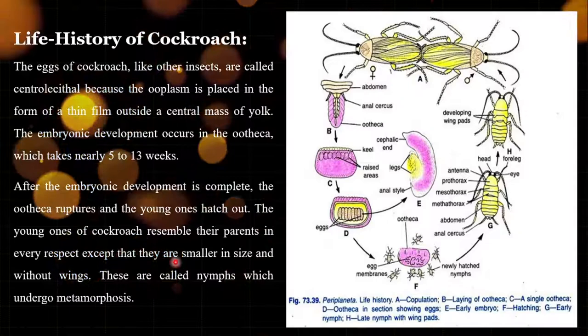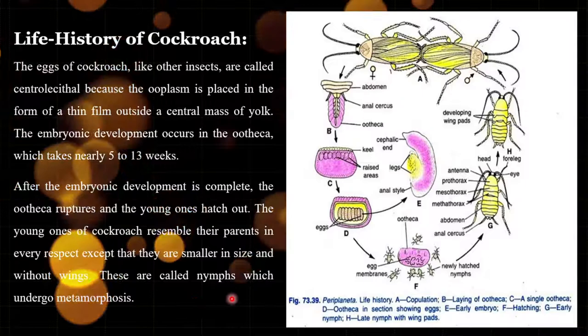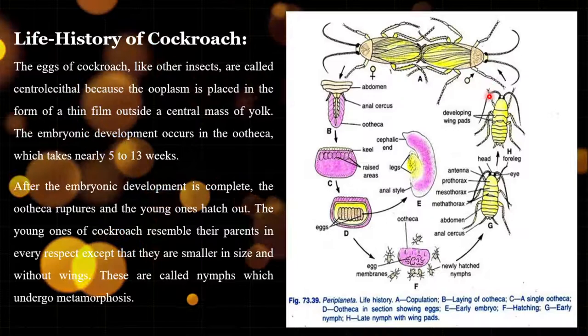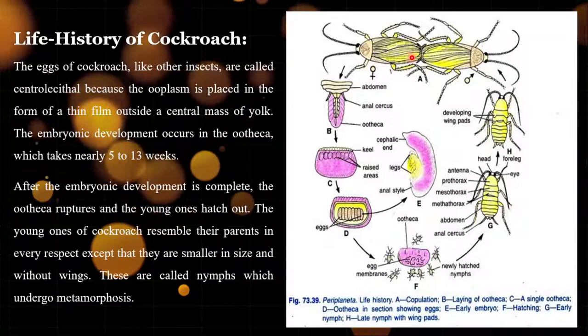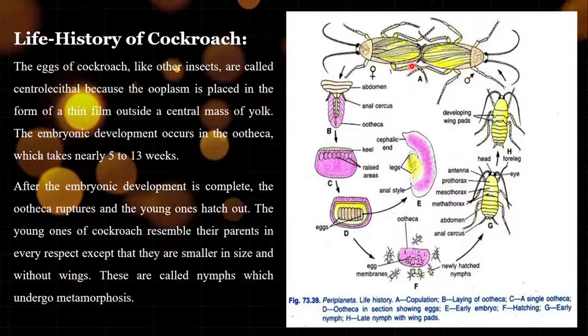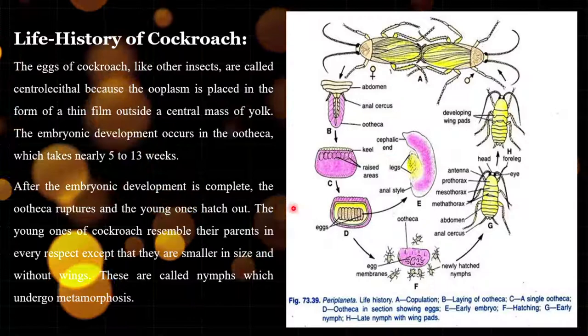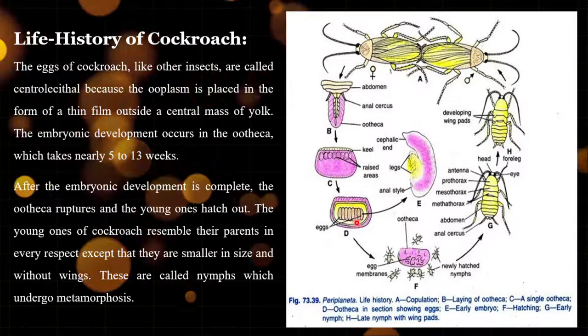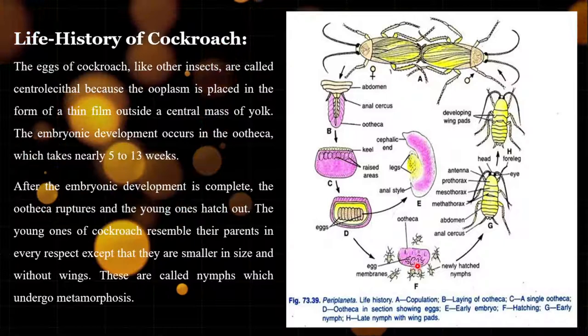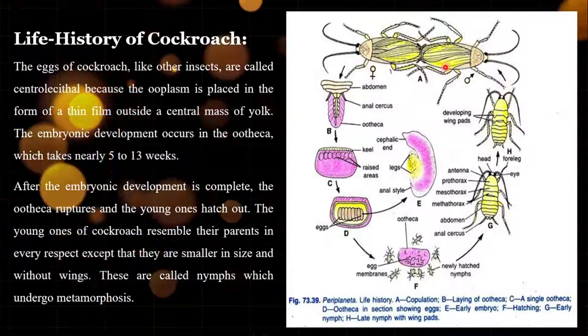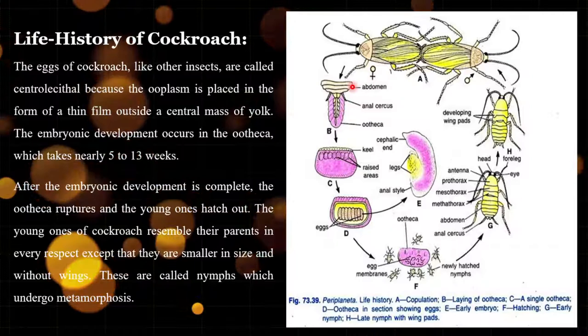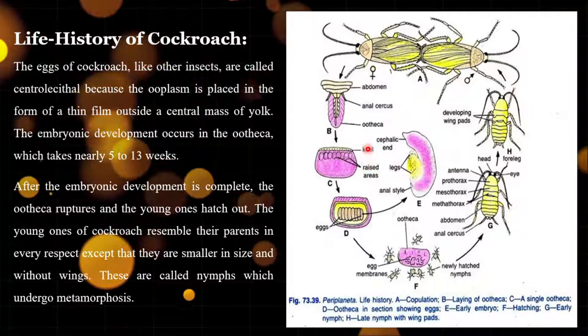The young ones of cockroach resemble their parents in every respect except they are smaller in size and lack wings. This stage is called nymphs. These nymphs undergo metamorphosis, after which they develop into male and female adult cockroaches. Again copulation takes place, eggs develop in the ootheca over 5 to 13 weeks, and nymphs hatch out once more. This is a simple and incomplete life cycle — the type of development in cockroaches is hemimetabolous.